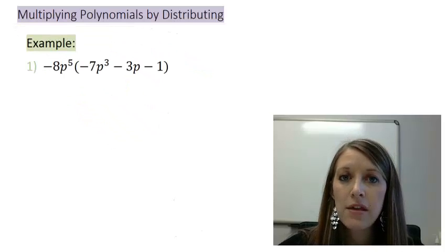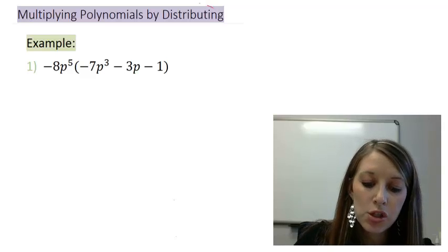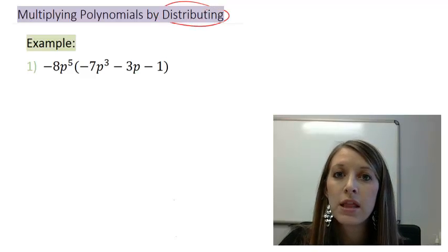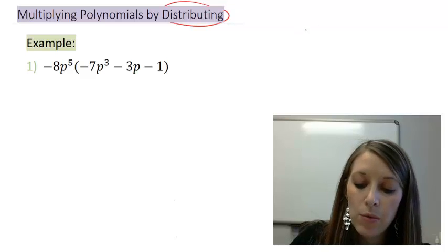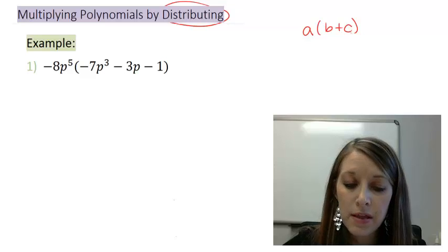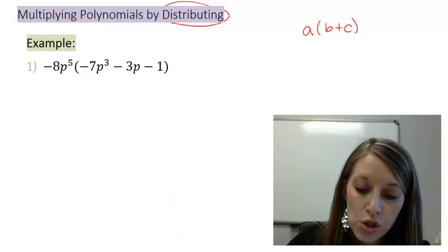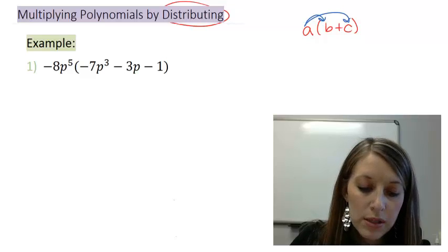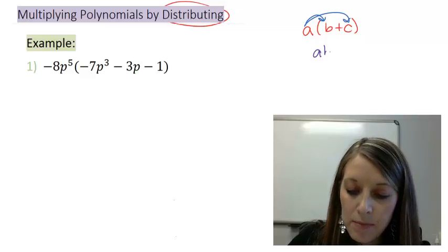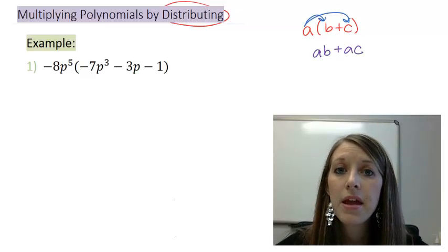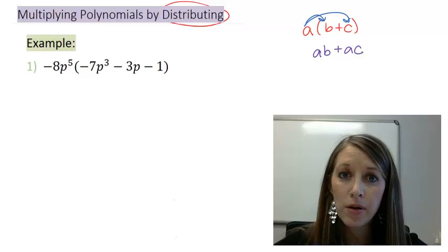The first way that we're going to multiply polynomials is by using the keyword distributing here. And we've seen this word before. We've learned it in the properties. We learned that when we had A times B plus C, where B and C are in the parentheses, we could distribute or feed the dog and feed the cat. So we would take it to be A times B plus A times C.